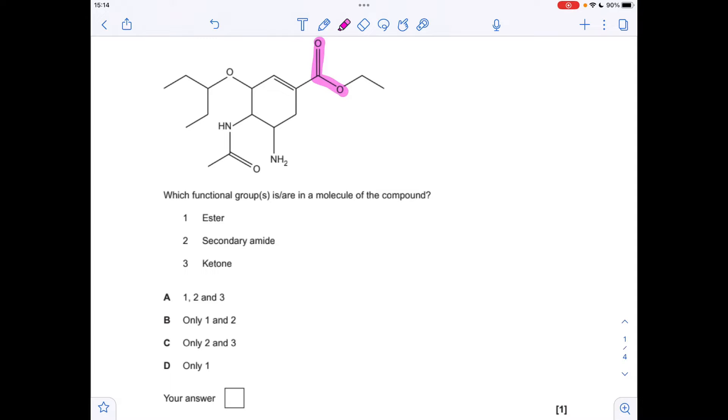Have we got a secondary amide? The answer is yes. There it is there. Have we got a ketone? No, we haven't. These aren't classed as ketone groups because they're part of another functional group. So we've just got 1 and 2, so it was option B.